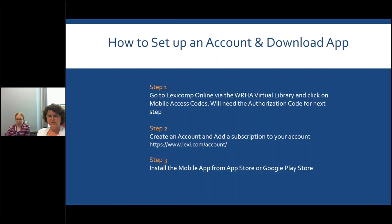Downloading the app is a bit of a complicated process, so we'll be sharing detailed instructions for both Apple and Android products. In general, you go to LexiComp online through the WRHA Virtual Library, click on the mobile access codes button, and it will bring up an authorization code you need to record. You then create an account and add your subscription using that authorization code. When you install the mobile app, it verifies you're the same person as logged in on desktop. You do have to renew periodically by getting a new authorization code.